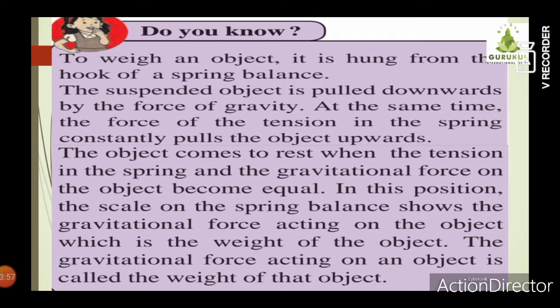If we weigh an object on Earth, will it give the same weight on the Moon? No. Because gravitational force differs on different planets, the weight of an object will differ from place to place, though its mass remains the same everywhere. If we measure an object on Earth its weight will be different from its weight on the Moon or any other planet, but their mass will remain the same.